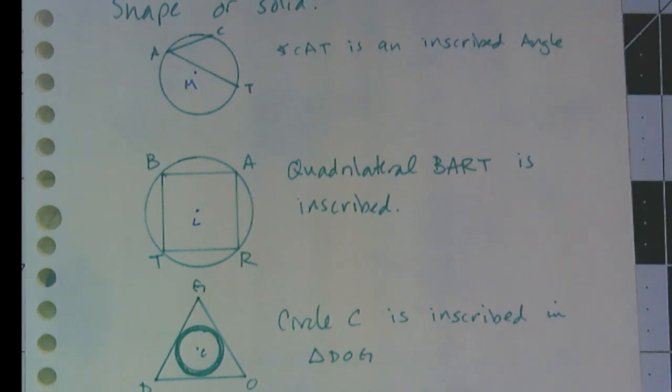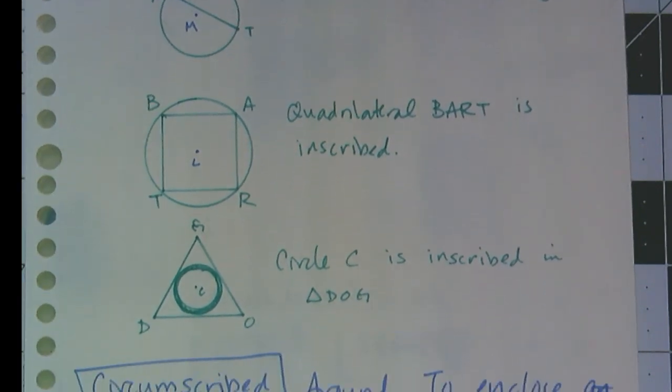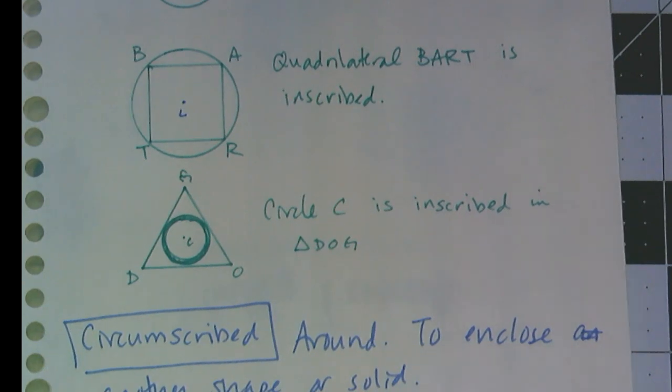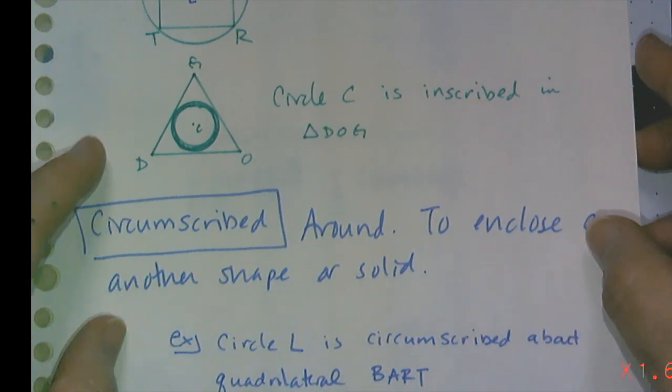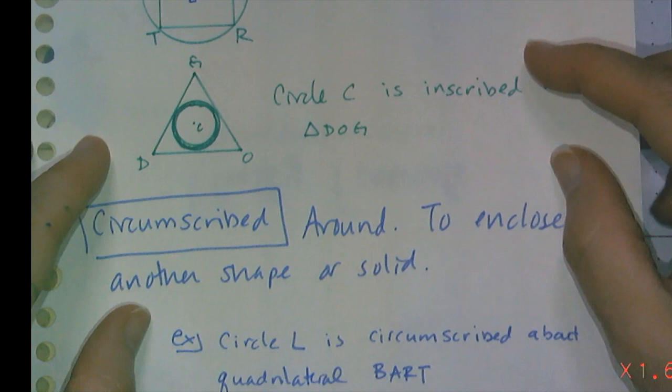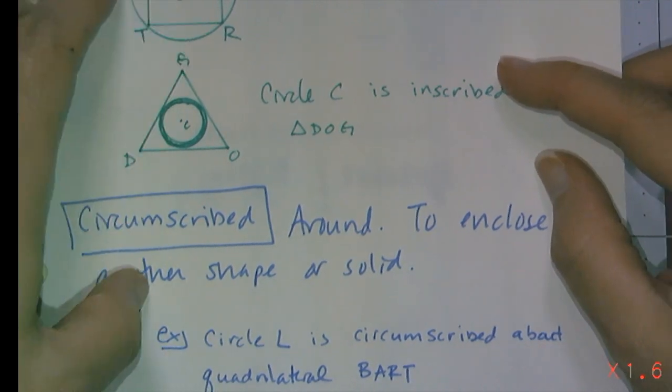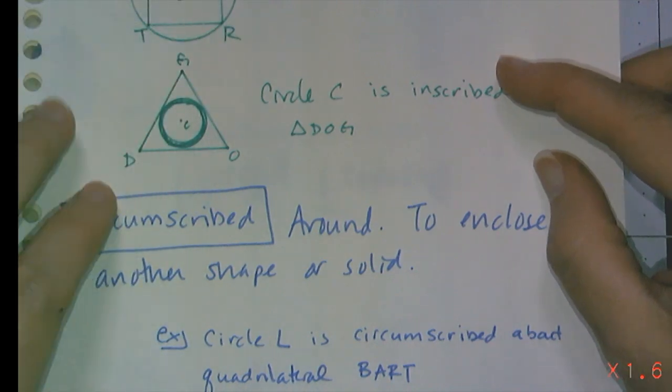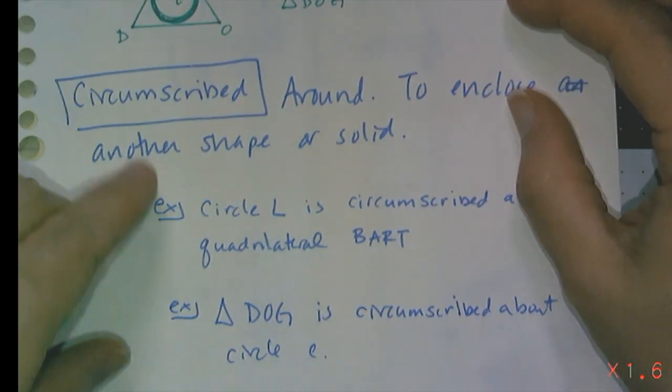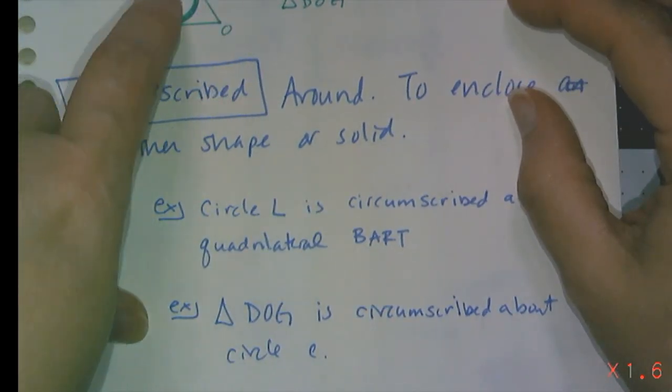And of course, we have the alternative word, meaning outside or around, and that is circumscribed. So to enclose another shape or solid. So I can go back to these drawings, and I could say circle L circumscribed about quadrilateral BART, meaning the circle is outside. Or I can say triangle DOG is circumscribed about circle C.